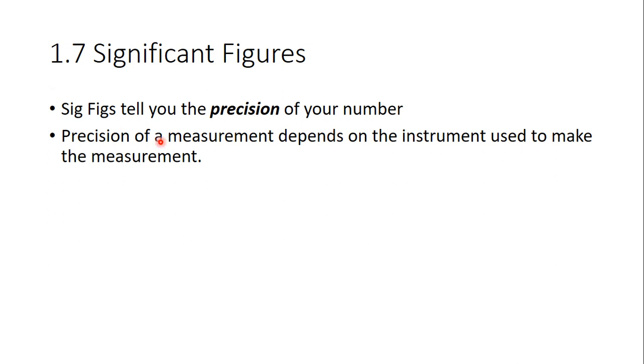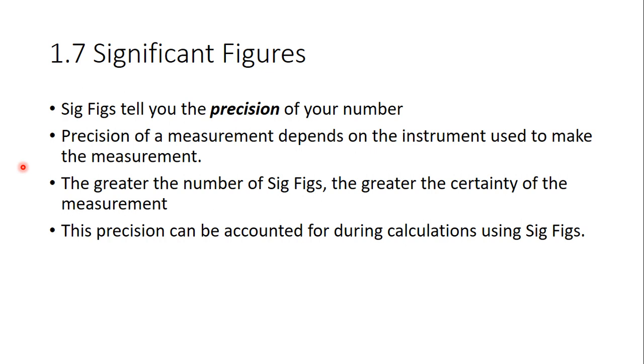Sig figs tell you the precision of the number you are reporting. If you're using an instrument in the lab, how you report the numbers from that instrument will tell you your precision. Basically, the greater the number of sig figs you have, the more precise or more certain you are of your measurement.